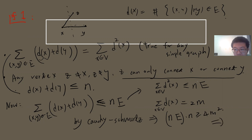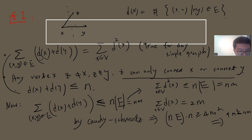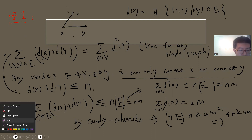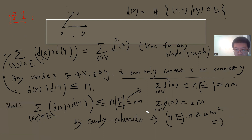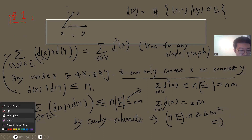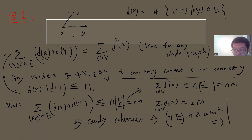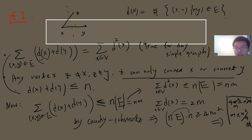Notice the number of edges I denote as m. So we have 4m squared less than or equal to n squared times m. Canceling m from both sides gives m is less than or equal to n squared divided by 4. This finishes proof one.